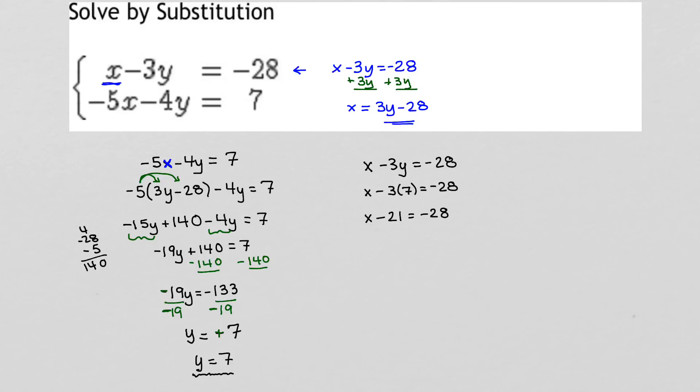Continuing to solve, I'm going to add 21 to both sides. So that tells me that x is actually equal to negative 7.